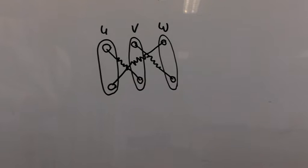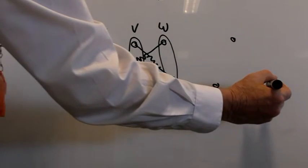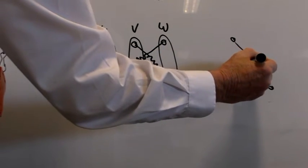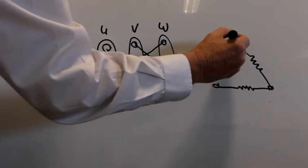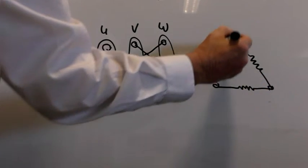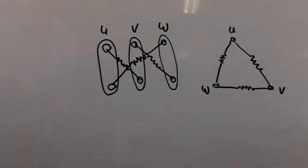Now if we open this out into the delta configuration this would give us this where we have the triangular delta configuration and we have U, V and W there.